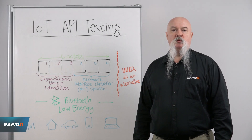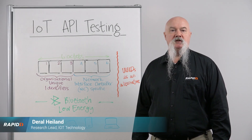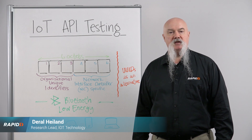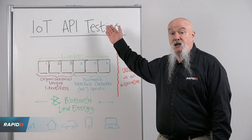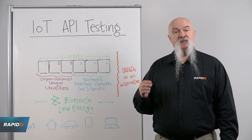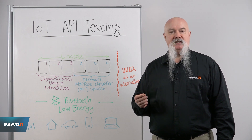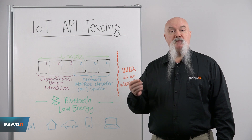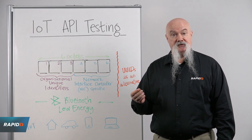Welcome to this week's Whiteboard Wednesday. My name is Darrell Hyland, Research Lead for IoT Technology here at Rapid7. This week we're going to be talking about IoT API testing — specifically, the tracking IDs used to identify, manage, and manipulate devices via cloud services.